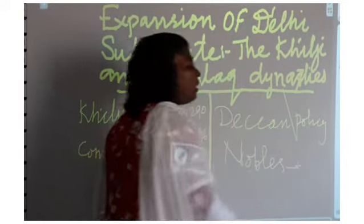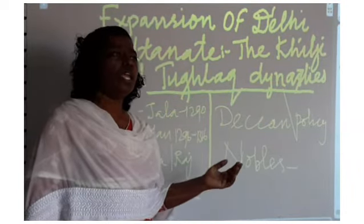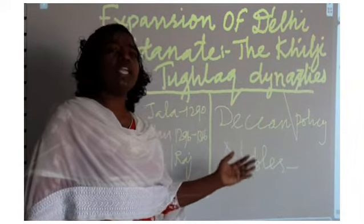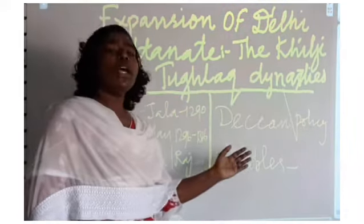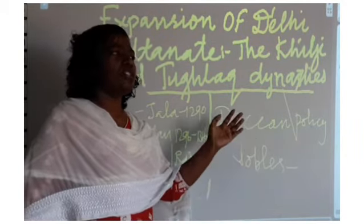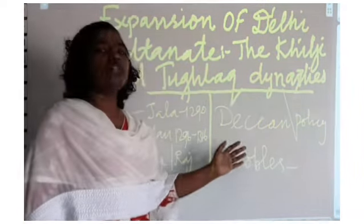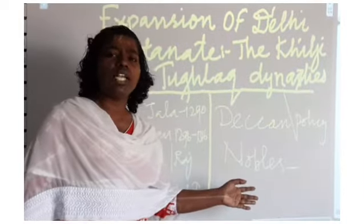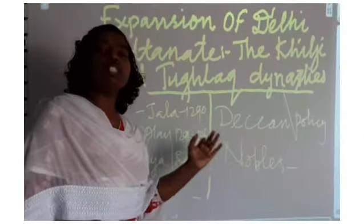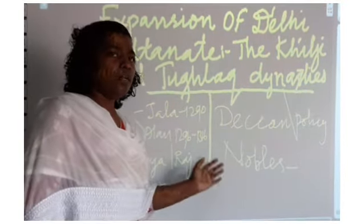The nobles were not allowed to attend any parties without permission of the ruler, and they were not allowed to marry - because if they married, the strength of the nobles would increase. He understood that. So no nobles were allowed to get married, attend parties, or have any drinks. A spy system was also used to watch over the movement of the nobles.